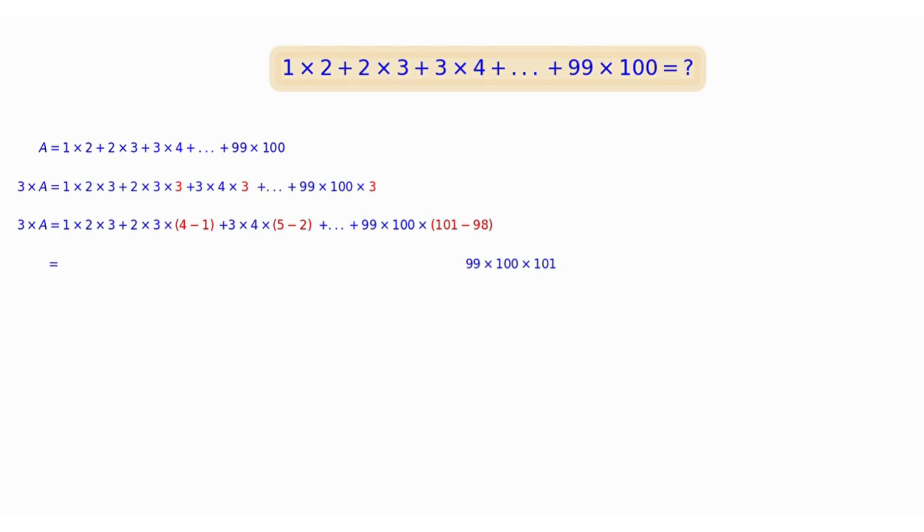The remaining term is 99 times 100 times 101. Dividing both sides by 3, the final result is obtained. A equals 33 times 100 times 101.